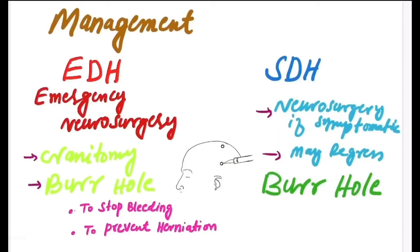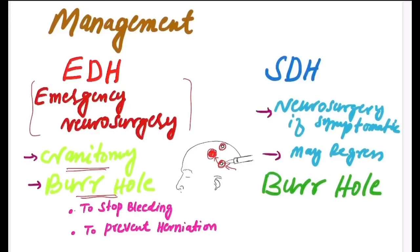Regarding management, extradural hematoma is a medical emergency and emergency neurosurgery is needed. Two procedures are done: open craniotomy or burr hole craniotomy. In burr hole craniotomy, two burr holes are made in the skull — from one burr hole, distilled water is injected with pressure to dislodge the clotted blood through the other hole. This is done to stop further bleeding and prevent herniation.